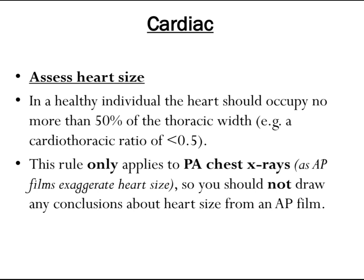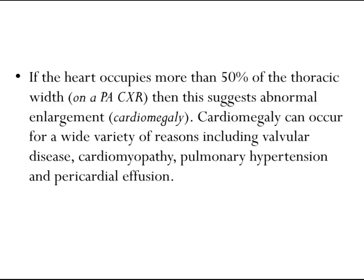C is for Cardiac. Assess the heart size — in a healthy individual the heart should occupy no more than 50% of the thoracic width, giving a cardiothoracic ratio of less than 0.5. This rule only applies to posterior-anterior chest x-rays, as anterior-posterior films exaggerate heart size. If the heart occupies more than 50% of the thoracic width on a posterior-anterior film, this suggests cardiomegaly, which can occur for a wide variety of reasons.